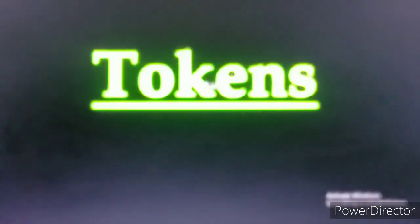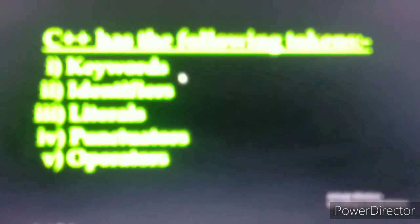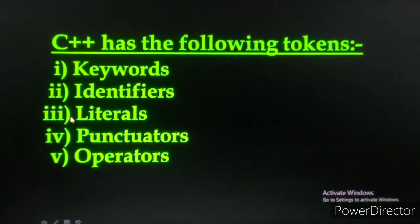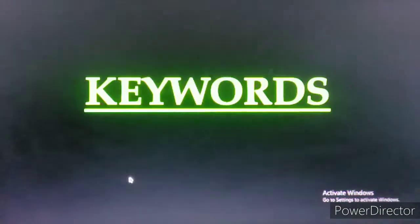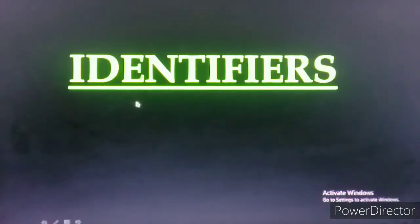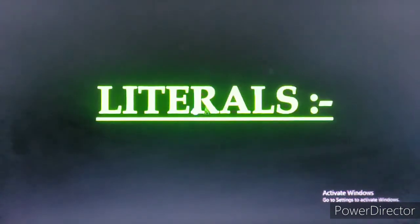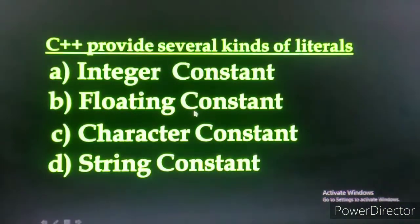क्या पढ़ा है इसमें से? पहला tokens, जो पाँच प्रकार का है। जिसमें से हम लोग keywords पढ़ चुके, identifiers पढ़ चुके, और literals पढ़ रहे हैं। तो पहला keywords पढ़ लिया, identifiers पढ़ लिया, literals पढ़ रहे हैं।